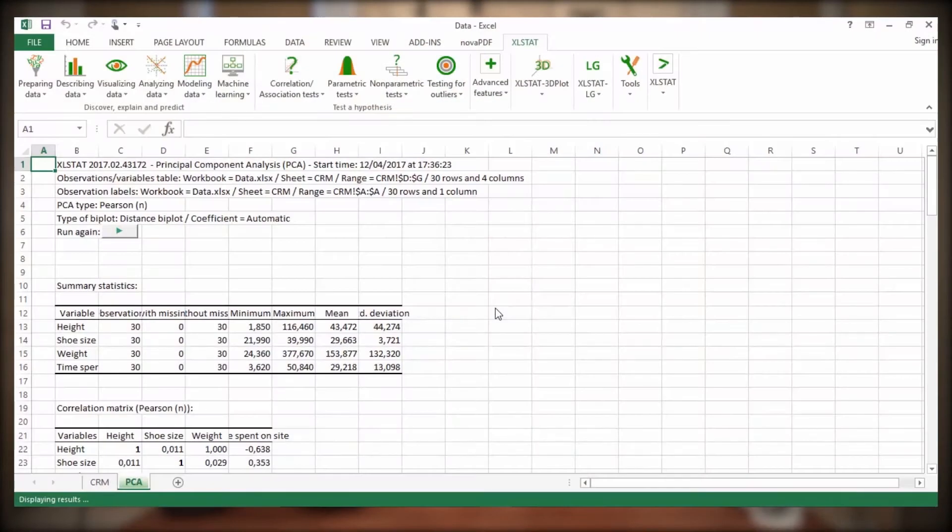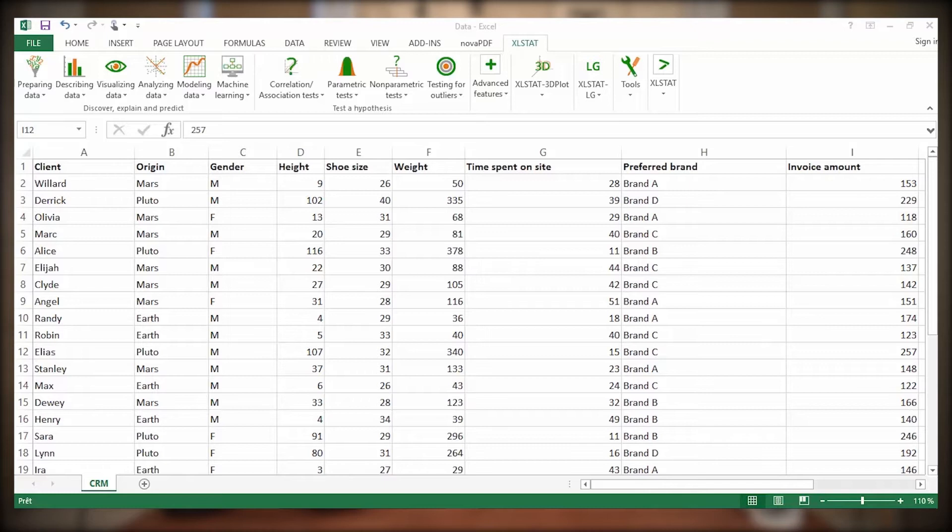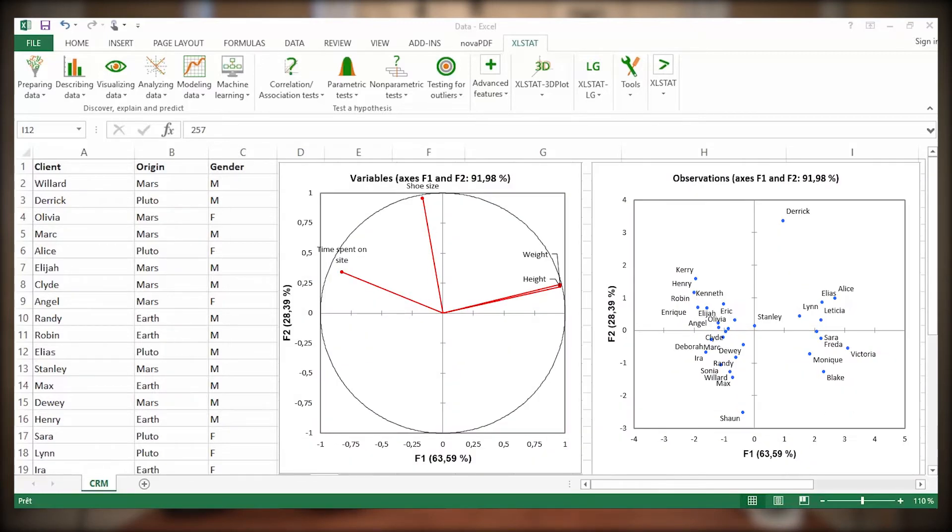Here are the PCA outputs we obtained in a previous video. These customers from an online shoe selling platform have been projected on two-dimensional charts along with the variables that describe them.